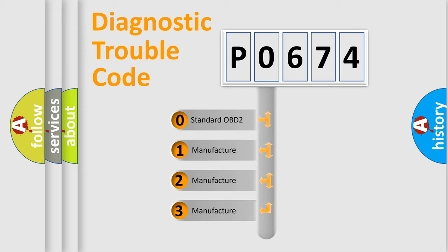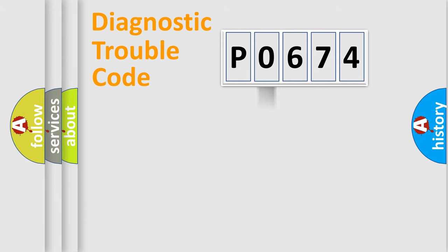If the second character is expressed as zero, it is a standardized error. In the case of numbers 1, 2, 3, it is a more prestigious expression of the car specific error.